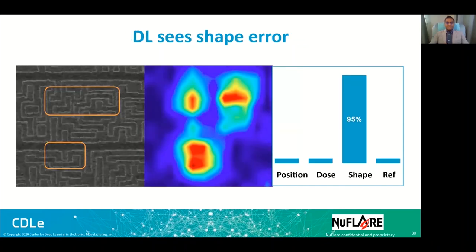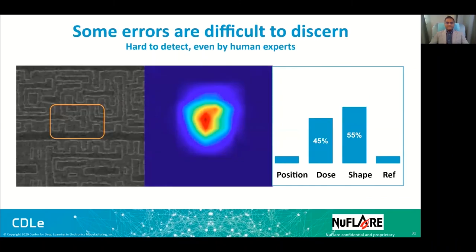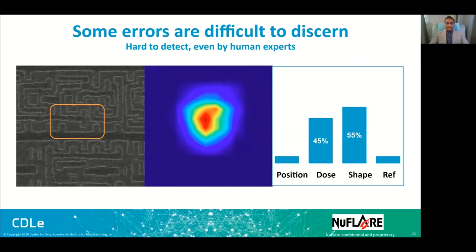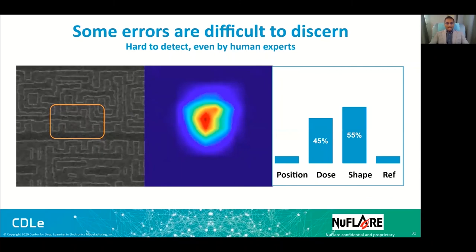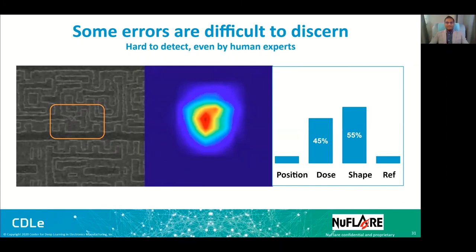In another example for shape error, the network gives a high probability for shape and focuses on the spot where the error is. In another example, the network gives almost equal probability to dose and shape error and also focuses on the right spot. However, as the network is confused, it turns out that this kind of error is even hard to discern by human experts, and other information is needed to make a good diagnosis on these errors.